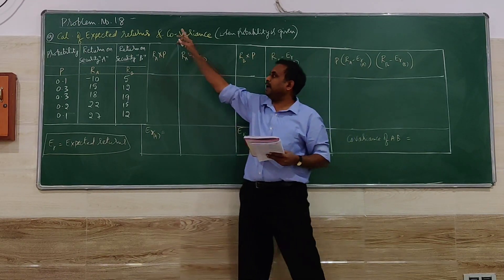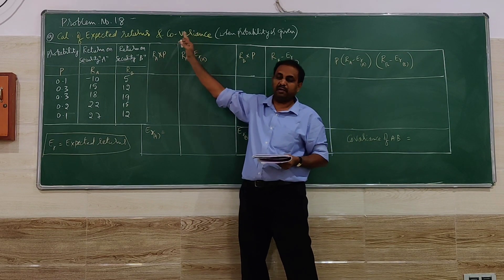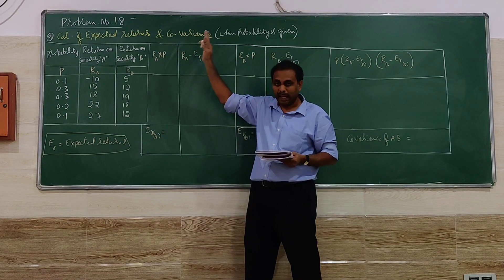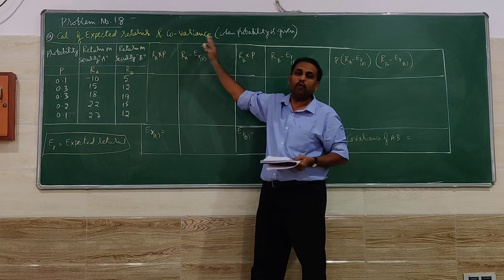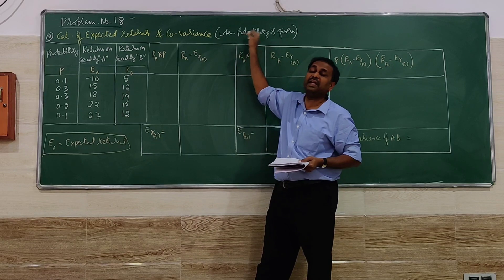Now we will move on to problem number 18. Here it is about calculation of expected returns and, with the help of expected returns, calculate covariance in a given situation when probability is given.